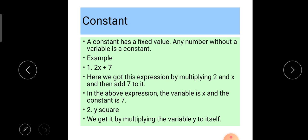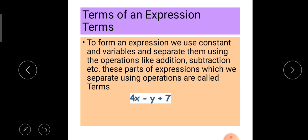A constant has a fixed value. Any number without a variable is a constant. For example, in 2x plus 7, the 7 is a constant. We separate terms using operations like addition, subtraction, etc.